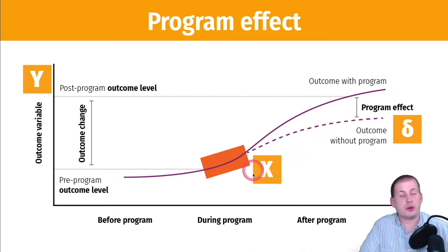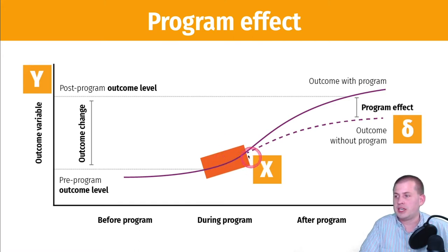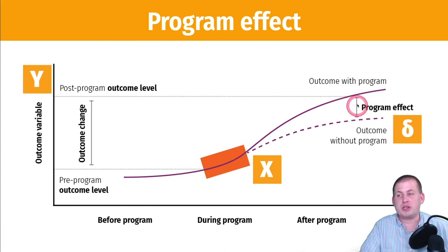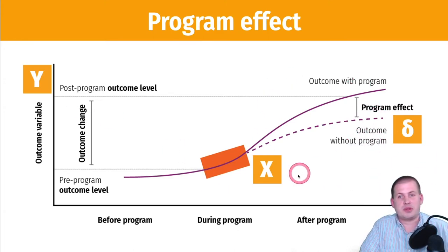We have x, which is the program, and y, which is the outcome. When we talk about the effect of x on y — using do calculus language — if somebody goes through this box and does the program, they'll have some sort of outcome. If they don't do it, they'll have a different outcome. That difference between what would have happened with the program and what actually did happen is our program effect, or delta.